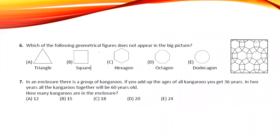Which of the following geometrical figures does not appear? You can see a triangle, you can see a square, you can see a hexagon. If you look very carefully, this is a 12-sided figure, but you cannot see an octagon. So the octagon does not appear.